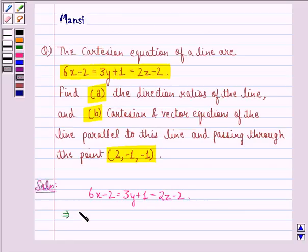This implies 6 times (x minus 1/3) equals 3 times (y plus 1/3) equals 2 times (z minus 1).